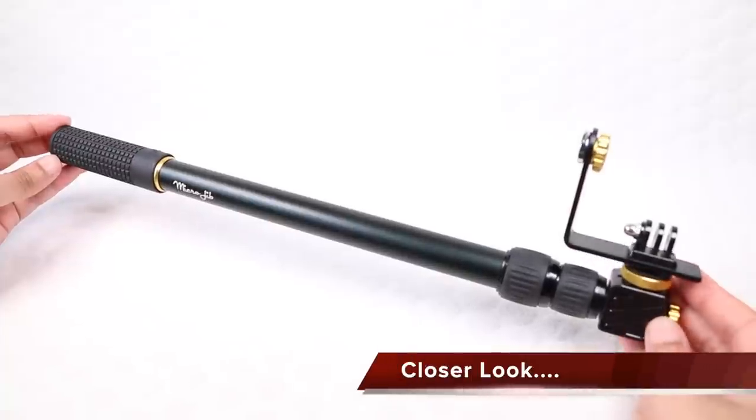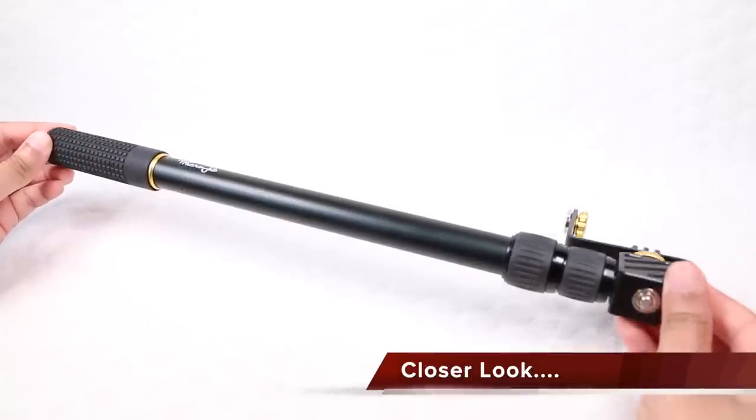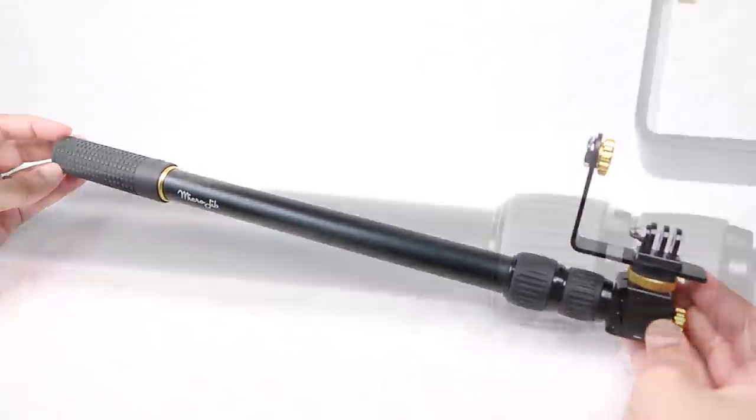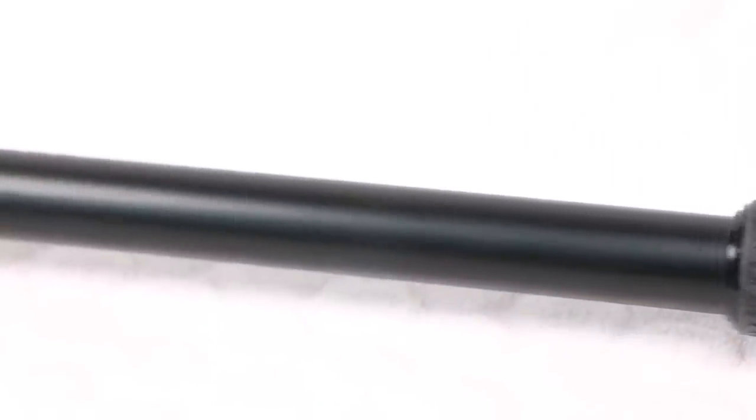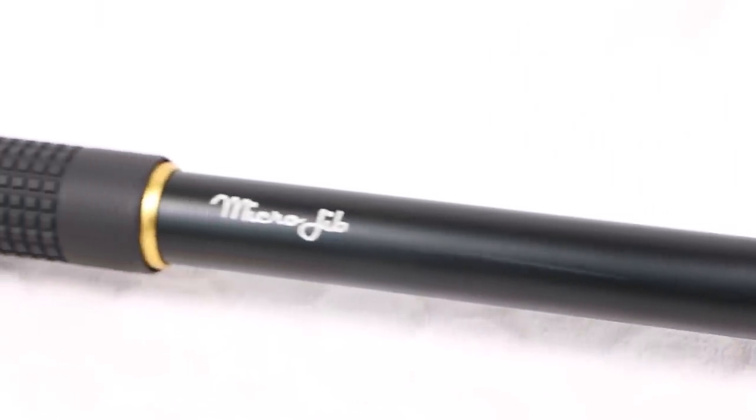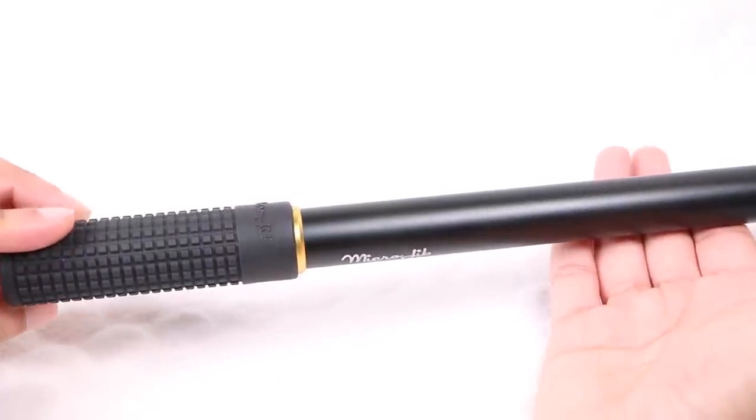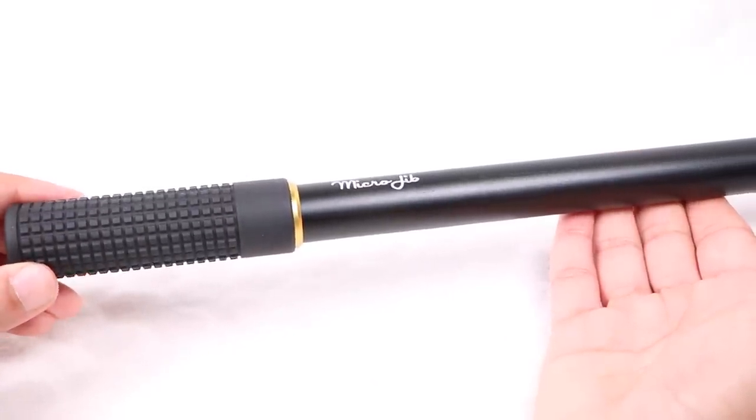Upon first glance, the Microjib certainly feels premium with some good weight, certainly not a cheap feeling extension pole whatsoever. The anodized aluminum pole even looks the part with a single Microjib logo on one side and an otherwise matte black finish with gold accents, providing a premium look as well as feel.